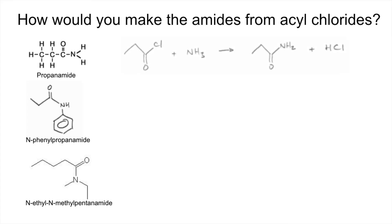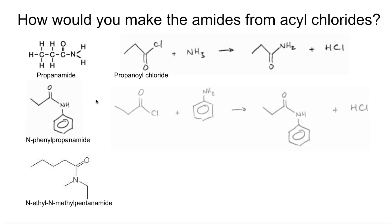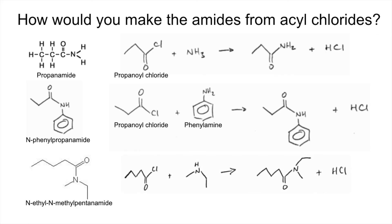For propanamide, you'd use the acyl chloride with three carbons — propanoyl chloride — reacted with ammonia. For N-phenyl propanamide, you'd still use propanoyl chloride for the carbonyl part, but use phenylamine as the amine. For N-ethyl N-methyl pentanamide, the acyl chloride you'd use is pentanoyl chloride (five carbons), and the secondary amine is N-methyl ethylamine.